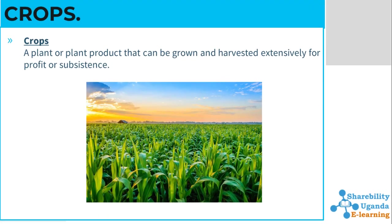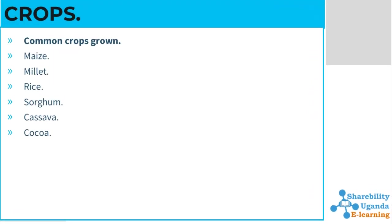Now let us switch to crops. What is a crop? A crop is a plant that can be grown and harvested extensively for profit or subsistence — like the tea crops you have seen grown on a large scale, for commercial use. Common crops we have include millet, tea, sorghum, rice, cassava, and cocoa. Those are the main crops mainly grown around Uganda and some other countries.